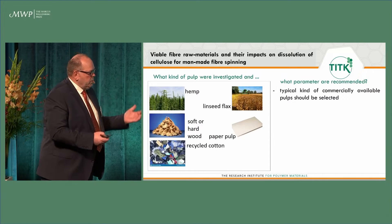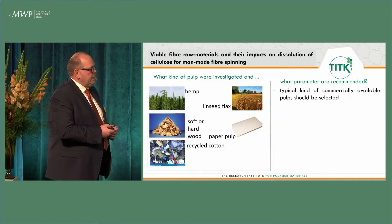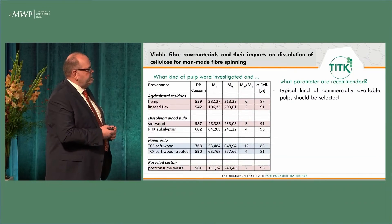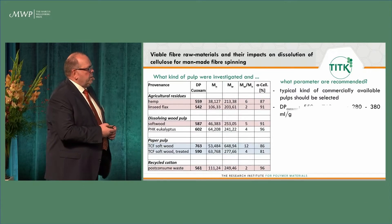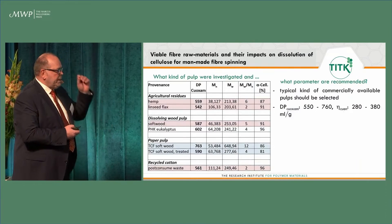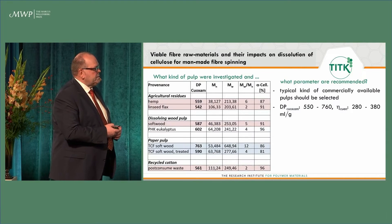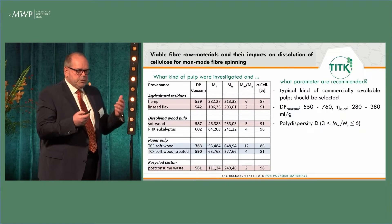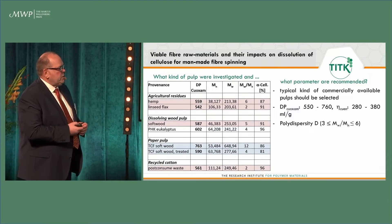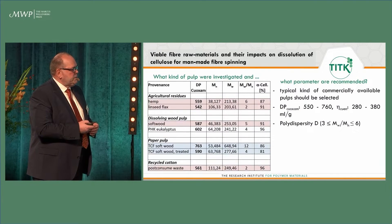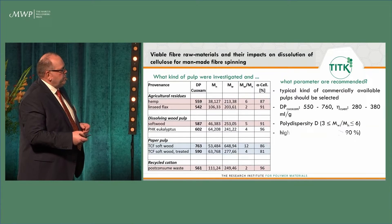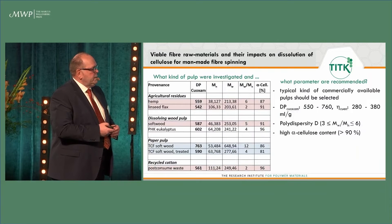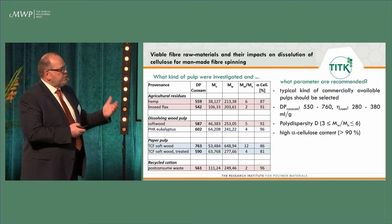We focused on typical commercially available pulps for our selection. I will give the most important parameters: we focused on a degree of polymerization in a specific range, as Herbert has mentioned, and also on polydispersity, which is a very important property of pulp, especially for direct dissolution. We selected polydispersities in the range of 3 to 6, and the polydispersity is the quotient of the weight average to the number average of the molecular weight.